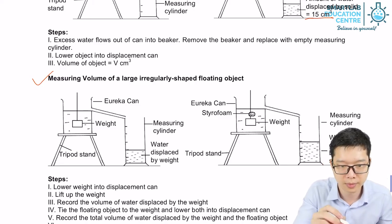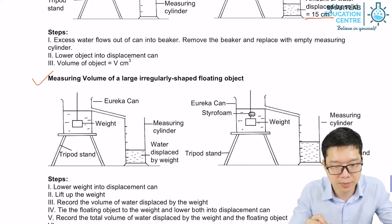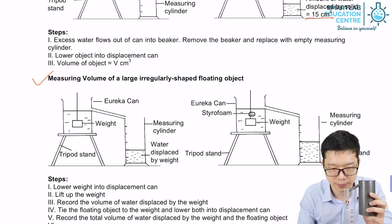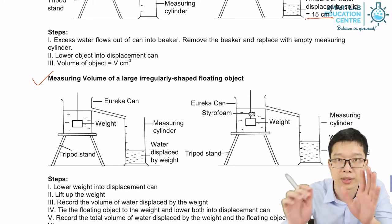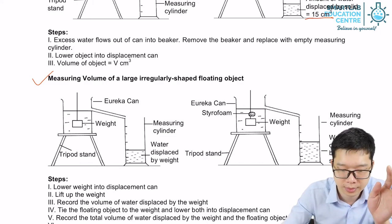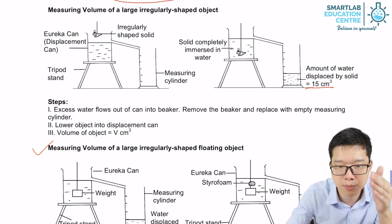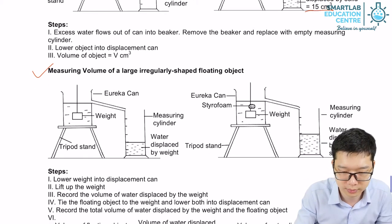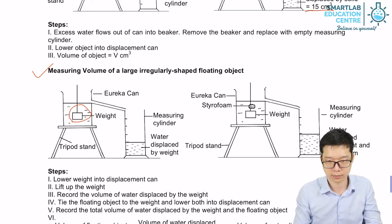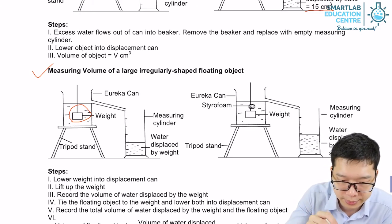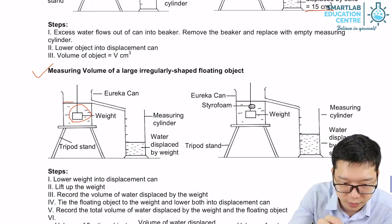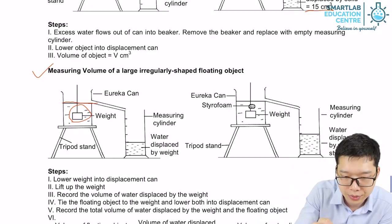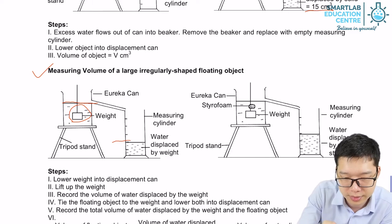Similarly, we set up this Eureka can and measuring cylinder setup. And instead of having just pure water inside the can, we have water and a weight over here. Then the water level is of certain height. So we get a reading from here. That's our reading one.